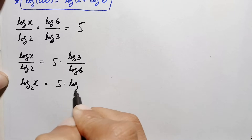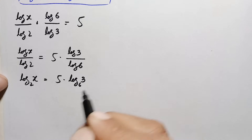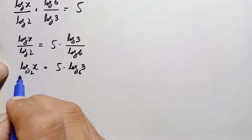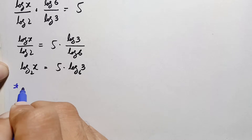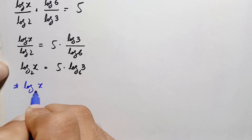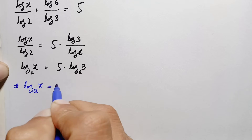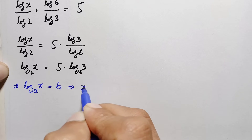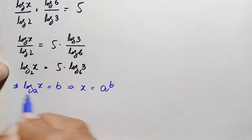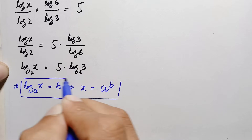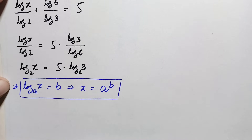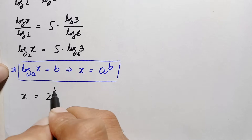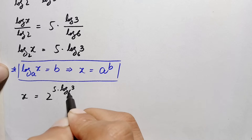Now on both sides we use the logarithm-to-exponential conversion property: if log base b of a equals c, then a equals b raised to power c. Applying this, x equals 2 raised to the power of (5 times log of 3 with base 6).